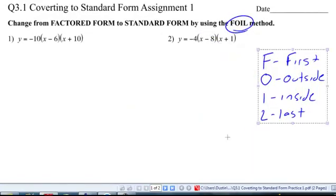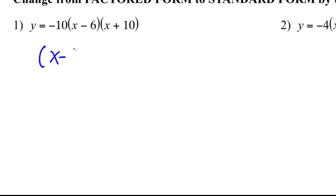So what does that mean for us? What we're going to do is change this form into standard form by multiplying our two terms that are inside of parentheses. So let's do it. I'm going to ignore this negative 10 for a little bit. I'm just going to focus on X minus 6 and X plus 10.